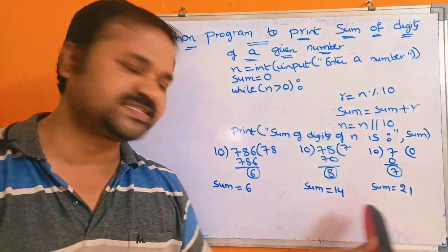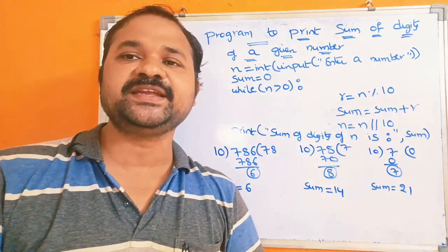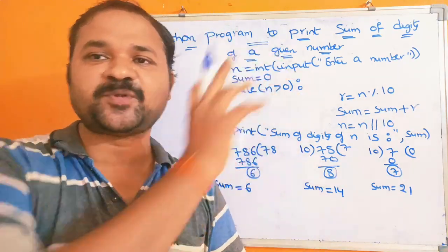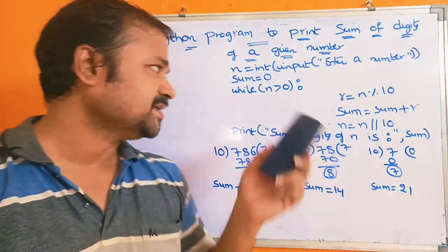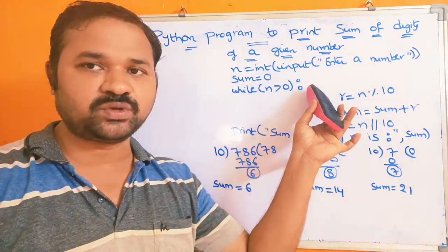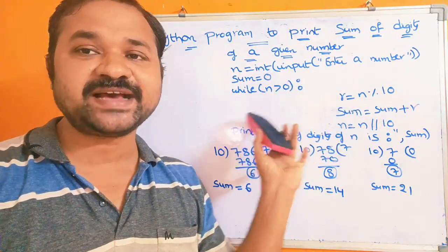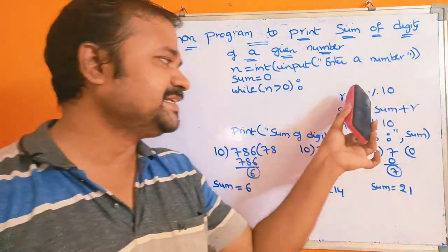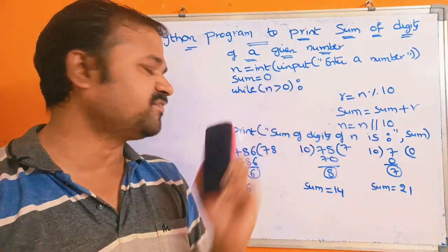Let's see the logic first, then we will see it with the help of a program, and then we will verify it practically on a computer whether the program is working properly or not. So while n is greater than 0, we have to perform the repetition as long as n is greater than 0. These three statements are the body of the while loop.